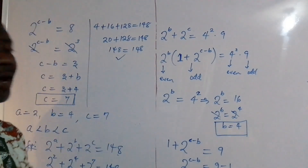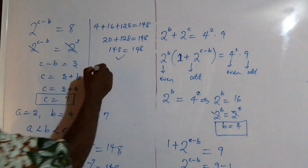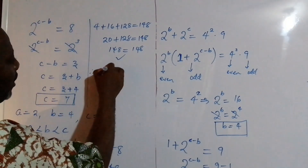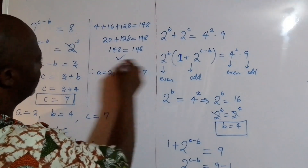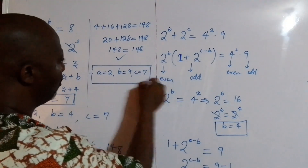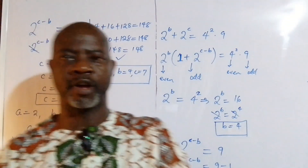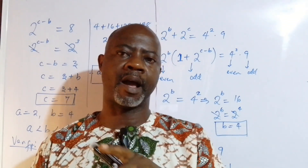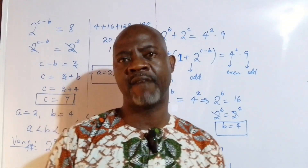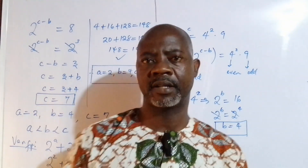So we can conclude that A equals 2, B equals 4, and C equals 7. That's the result. I'll see you in the next class. There's a playlist showing right before you — please click on it to see other videos on my channel. Thank you.